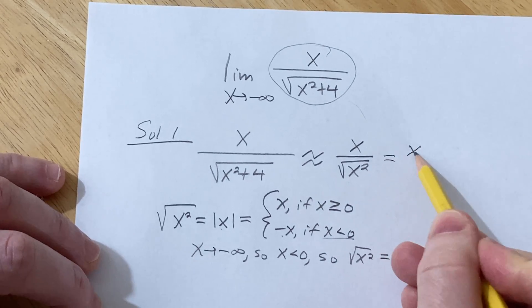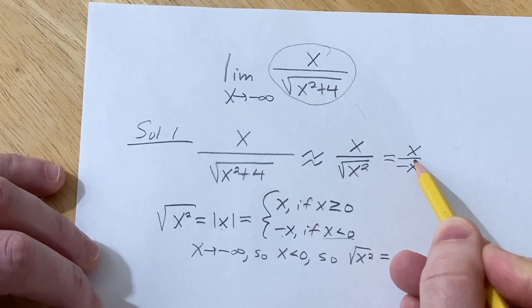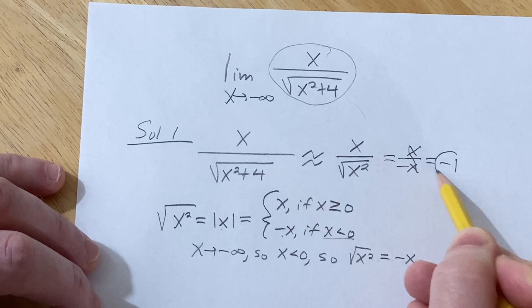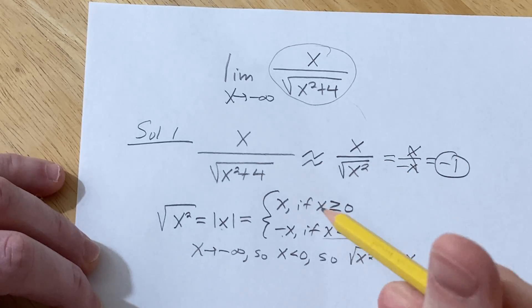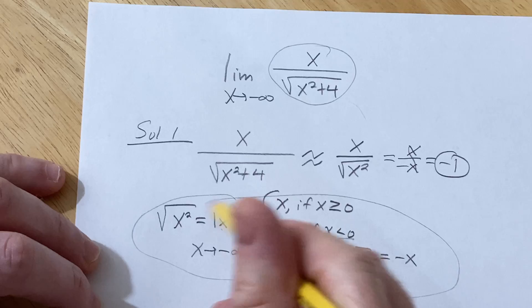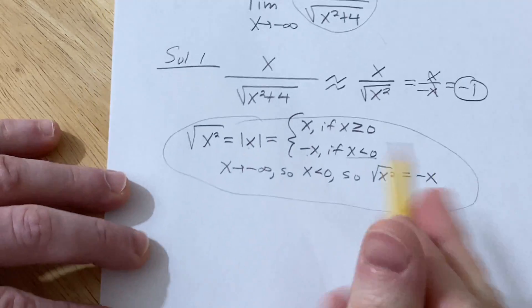So this here is actually equal to x over negative x. These cancel and you just get negative 1 and that's going to be the limit. So that's really the key right here. This is the key to doing this problem. Let me show you another way to do it.